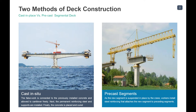A balanced cantilever bridge has a pier table constructed first, then segments of the deck are erected simultaneously on the left and right so there won't be huge unbalanced moments at the pier locations. One method of deck construction is cast-in-place, where formwork is put in, connected to previously installed concrete and allowed to cantilever freely. Permanent reinforcing steel and supports are installed, concrete is poured and cured, then the next segment is constructed.